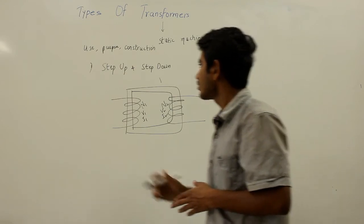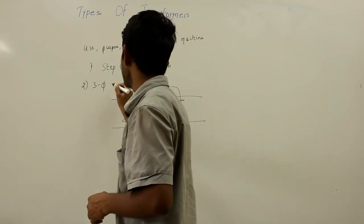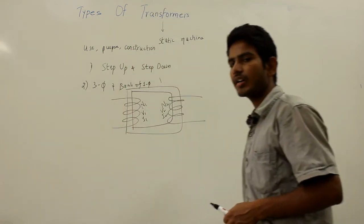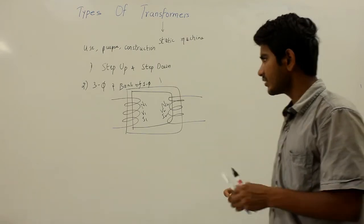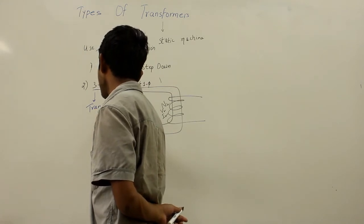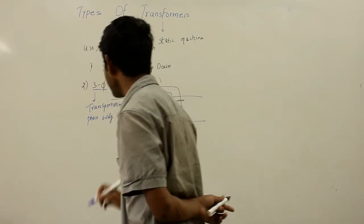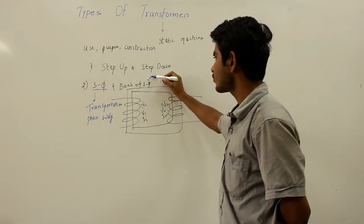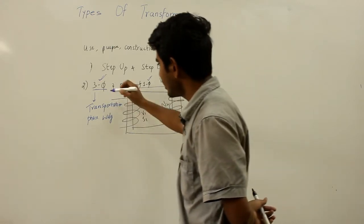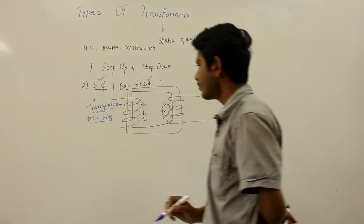The second type is the three-phase transformer and a bank of single-phase transformers. Three-phase transformers are used in three-phase power systems, but a three-phase transformer finds some difficulty in transportation and must be removed from service entirely if any of the phase windings breaks down. Where size matters, you can go for a bank of single-phase transformers.